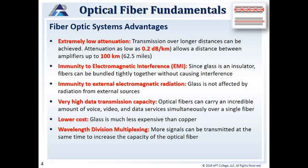Fiber optic systems have a lot of advantages. There's extremely low attenuation — transmission over longer distances can be achieved. Attenuation as low as 0.2 dB per kilometer allows a distance between amplifiers up to 100 kilometers or 62.5 miles. There's immunity to electromagnetic interference. Glass is an insulator, so it doesn't conduct or isn't affected by electromagnetic interference, and fibers can be bundled tightly together without causing interference to each other.